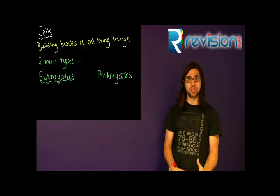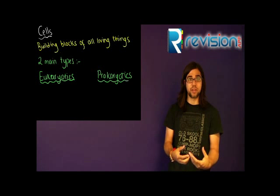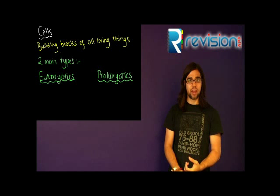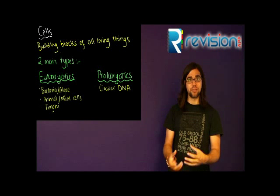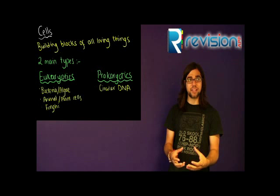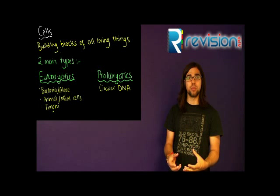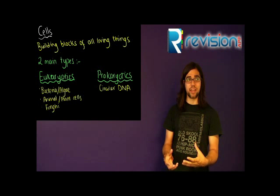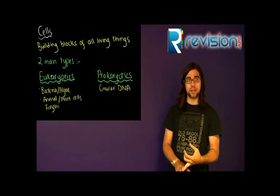There are two main types of cells amongst living things: eukaryotes and prokaryotes. Prokaryotes are primarily found in bacteria and things we call cyanobacteria — they used to be called blue-green algae. Eukaryotes we have in animal cells, plant cells, protoctista, and fungi.